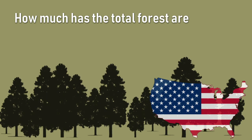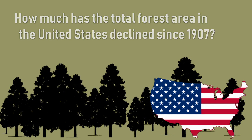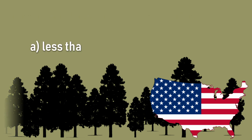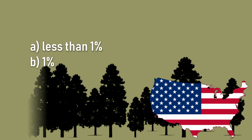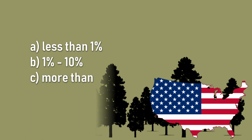How much has the total forest area in the United States declined since 1907? A. Less than 1%. B. 1% to 10%. Or C. More than 10%.